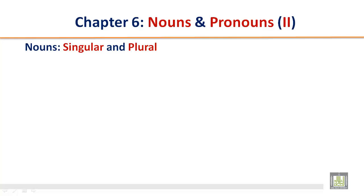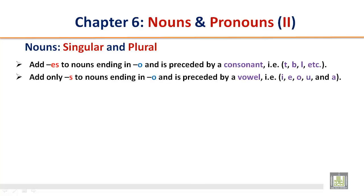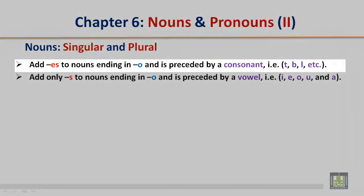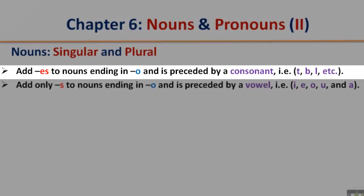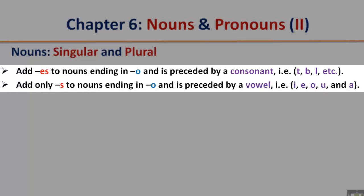Nouns, singular and plural. Add ES to nouns ending in O that is preceded by a consonant. Add only S to nouns ending in O that is preceded by a vowel.